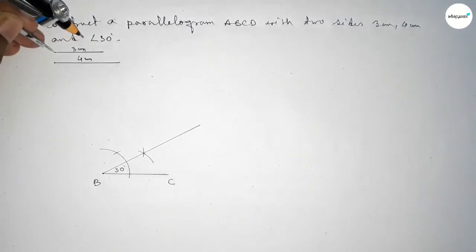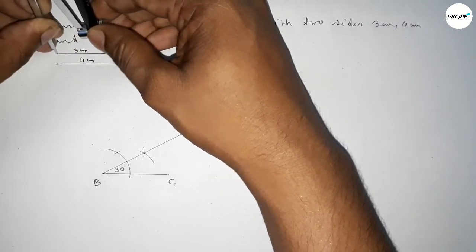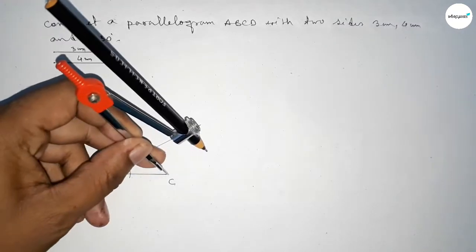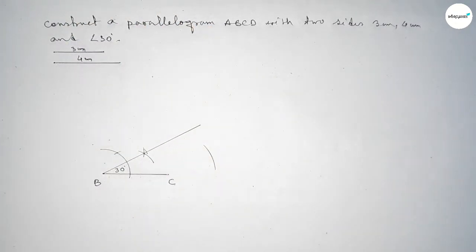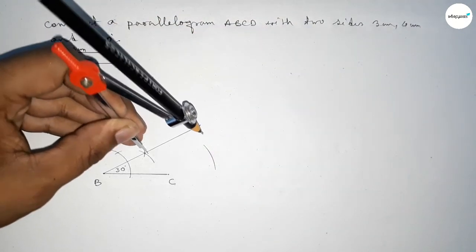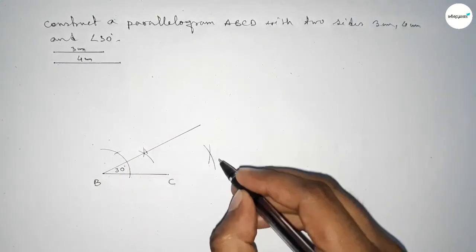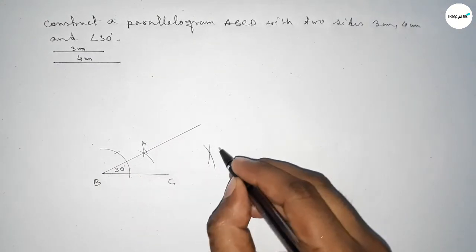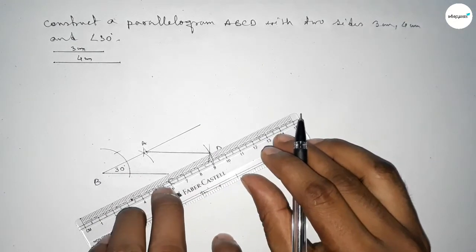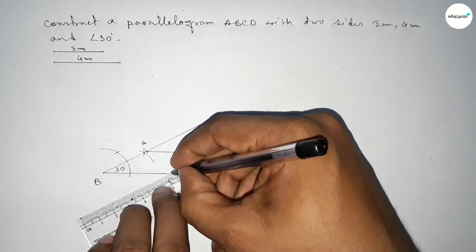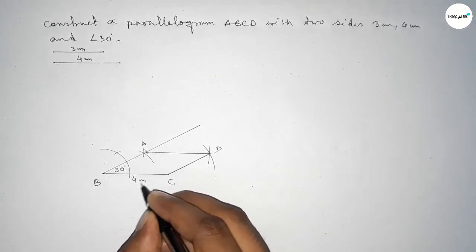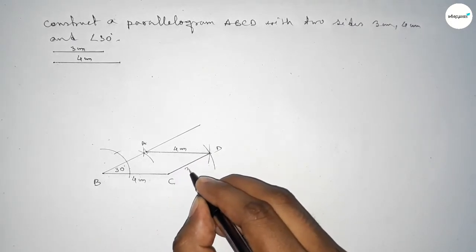Now taking the length of 3 centimeters using the compass and putting it here, cutting with the same length. Then taking the length of 4 centimeters using the compass and cutting here so both curves intersect at a point. We mark points A and D, then join A to D and join C to D.